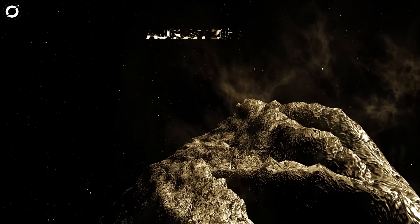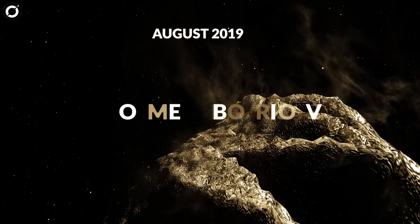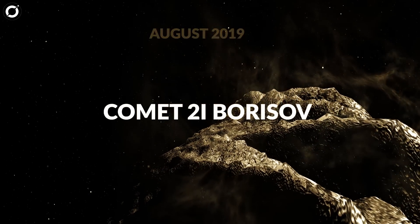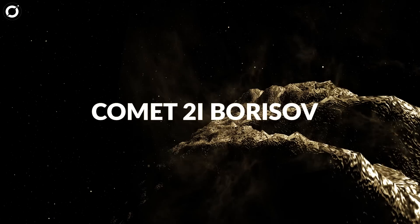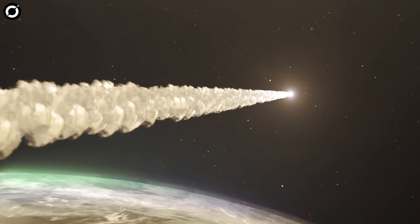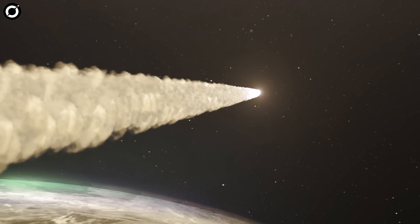Then in August 2019, Comet 2I Borisov traveled through our solar system, becoming the second interstellar visitor to cruise through. Together, the visitors generated a wave of inquiry and speculation.